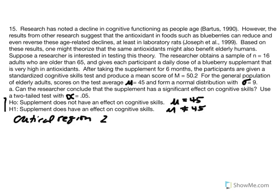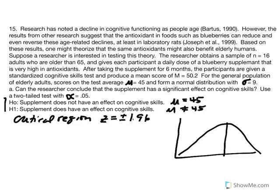To conduct our test we identify the critical region: z equals positive/negative 1.96. The average cognitive skills score is 45, and we hope to find a z value greater than 1.96 or less than negative 1.96 — in other words, falling in the critical region. We'll calculate our z score. First we need our standard error: standard error equals standard deviation of 9 over the square root of 16 individuals.